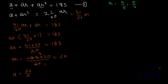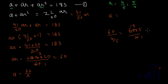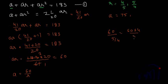The two values of r are 4/5 and 5/4. If r = 4/5, then a = 60 ÷ (4/5) = 60 × (5/4) = 75. If r = 5/4, then a = 60 ÷ (5/4) = 60 × (4/5) = 48. So these are the two sets of values for a and r.